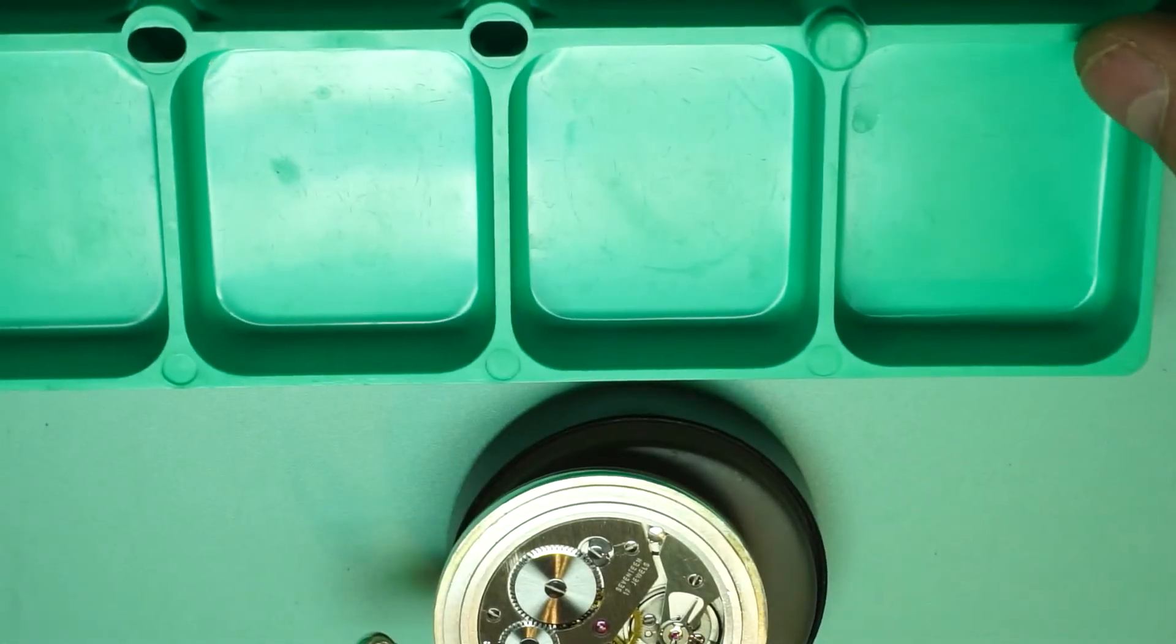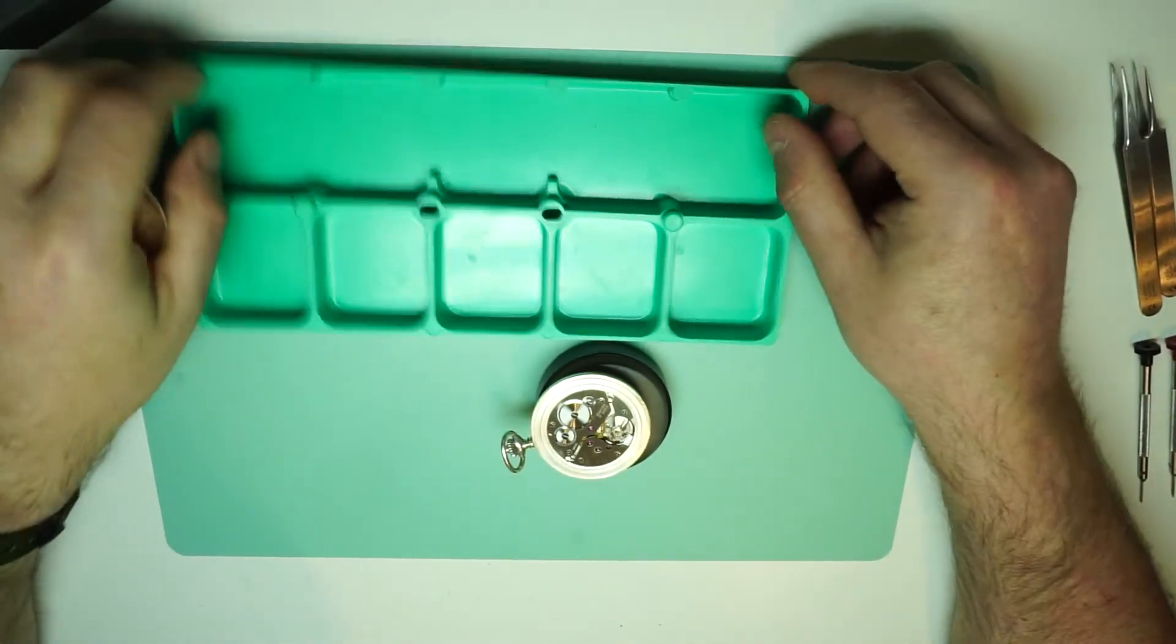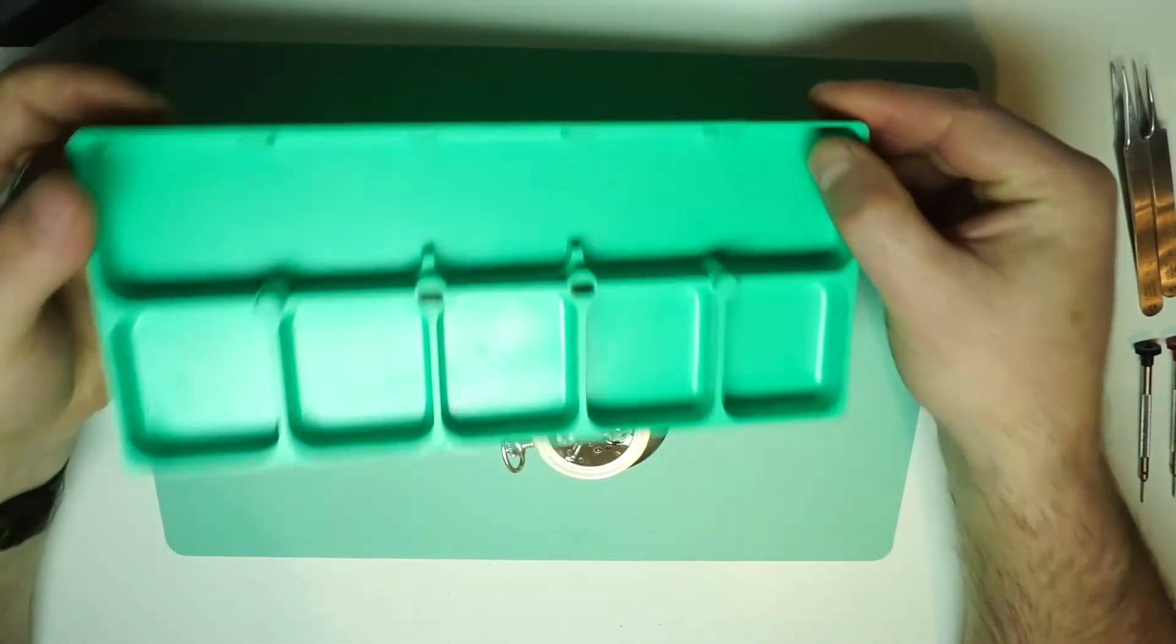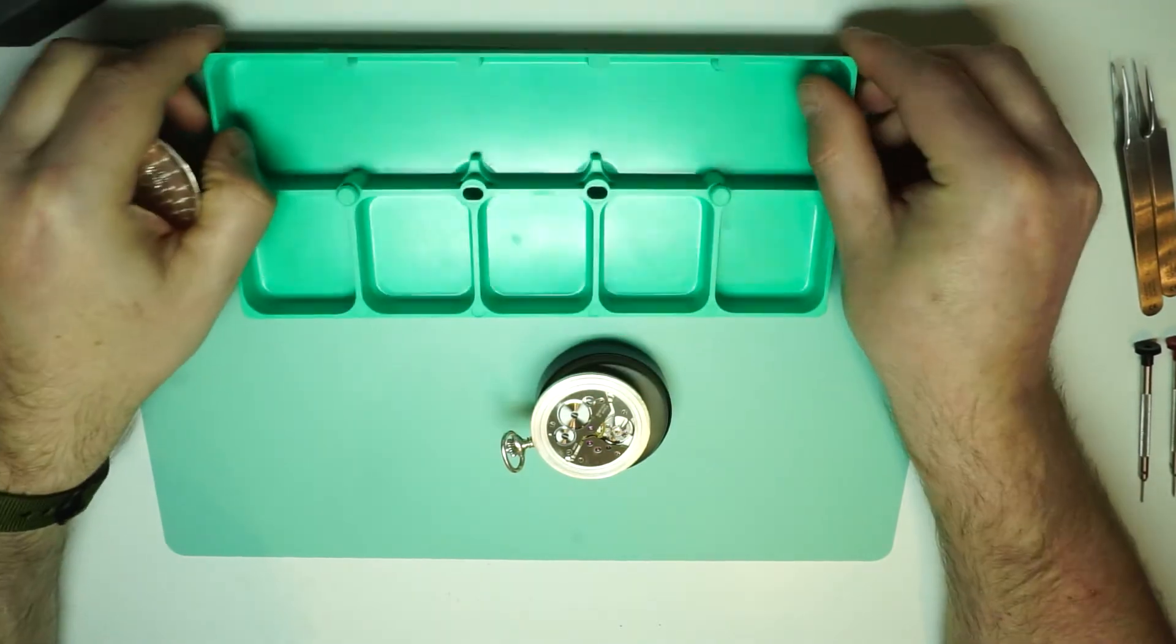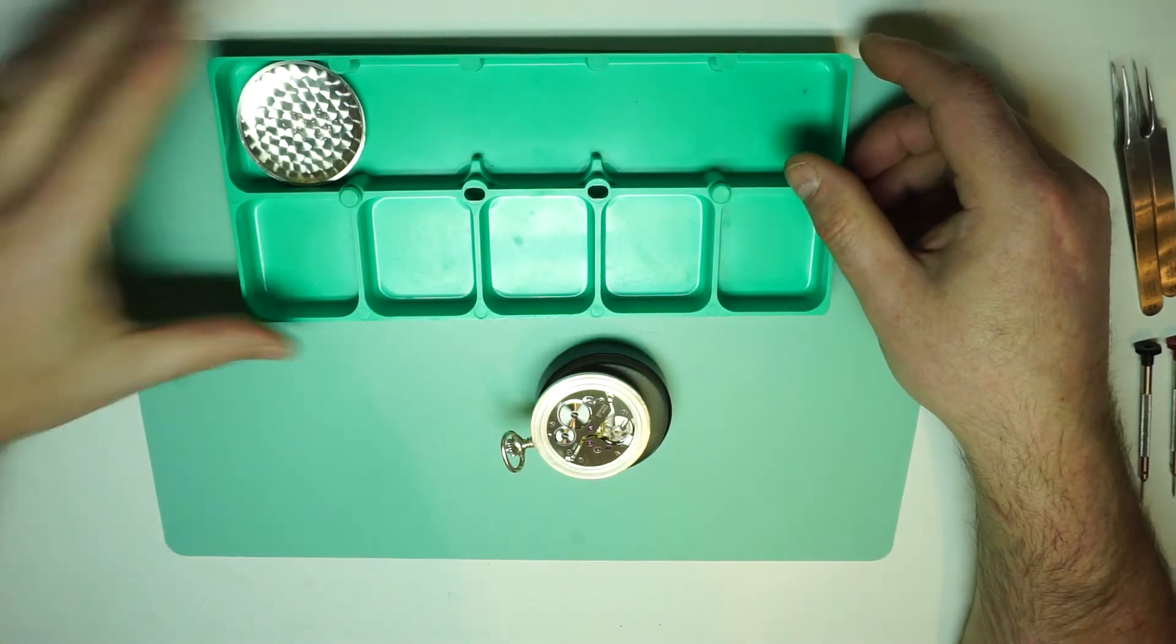Whenever you're starting something like this, you want to have a parts tray so that you can keep all the parts nice and safe and you don't lose any. So the rear case can go in there, we can put the box to one side.